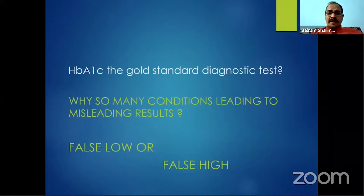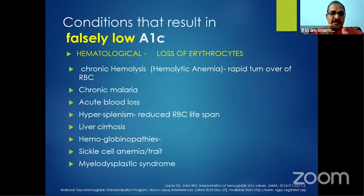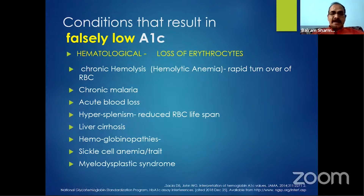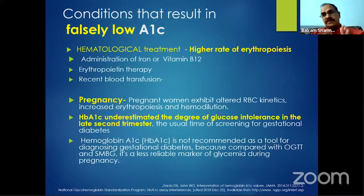Despite being used as a gold standard, there are various situations where false low or false high HbA1C levels can occur. Conditions causing falsely low HbA1C include hematological conditions with erythrocyte loss or rapid RBC turnover — hemolysis, hemolytic anemia, chronic malaria, acute blood loss, hypersplenism, cirrhosis, various hemoglobinopathies, sickle cell anemia or trait, and myelodysplastic syndromes.